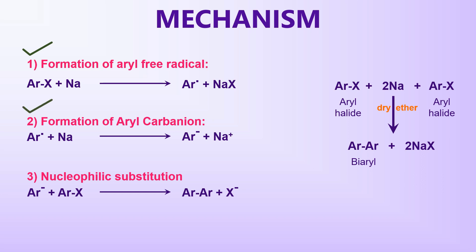The second step involves formation of the aryl carbanion. Another electron is transferred from a sodium atom to the aryl free radical, forming an aryl carbanion. Finally, the nucleophilic substitution step: the aryl carbanion acts as a nucleophile, displacing the halide group in another aryl halide. This substitution reaction yields a bi-aryl compound.